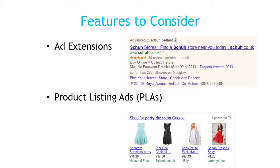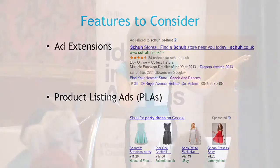You also have product listing ads. These are really for anyone who sells online. If someone searches for 'party dress', for example, you can have it come up in the search results with an image of your dress and the price, so people know straight away what to expect. You can have both your text ad and the product listing ad running at the same time, taking up quite a bit of space on the search results page.